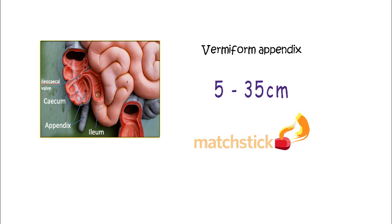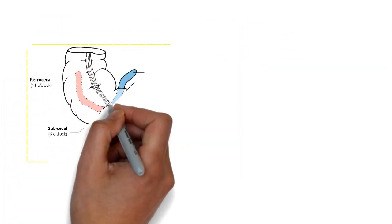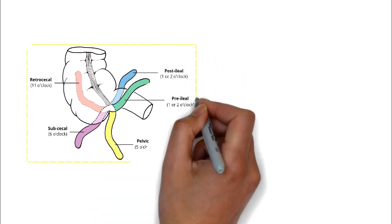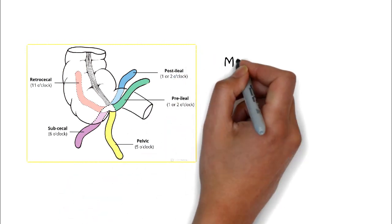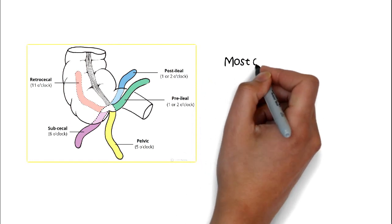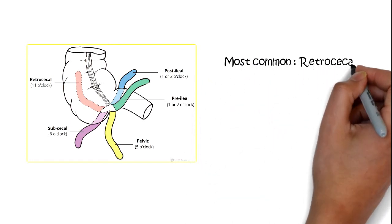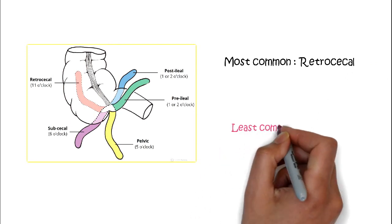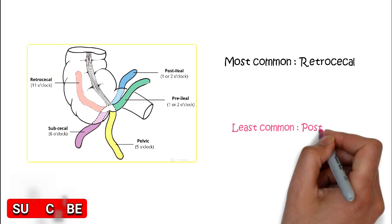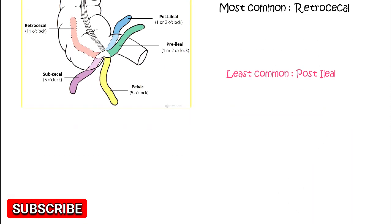The location of the appendix is the posteromedial aspect of the tip of the cecum, at the area of convergence of the taenia. The position of the tip of the appendix is variable; the most common position is the retrocecal position, accounting for 74%, followed by the pelvic position. The retrocecal position is most common because during childhood, continued growth of the cecum commonly rotates the appendix into a retrocecal but intraperitoneal position.